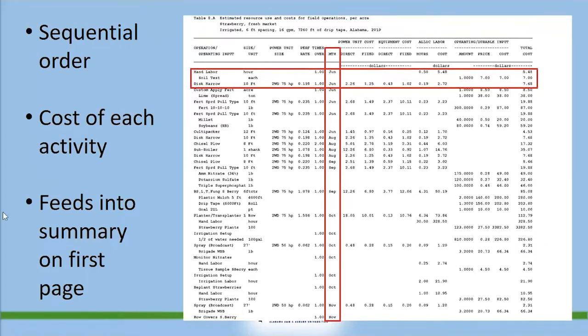The budget lists in sequential order all the activities expected to grow the crop. In this case, the first activity listed is completing a soil test. It estimates it would take half an hour of hand labor and the cost of the test being $7.